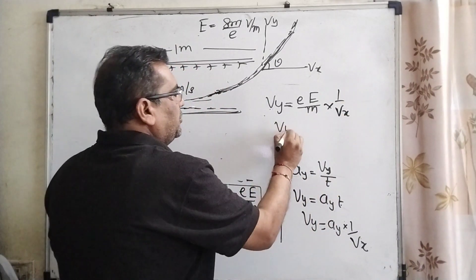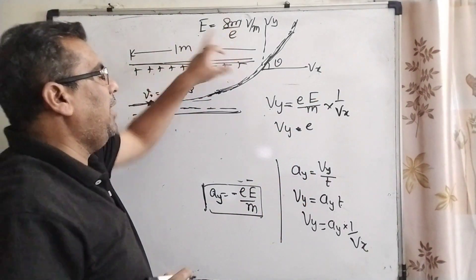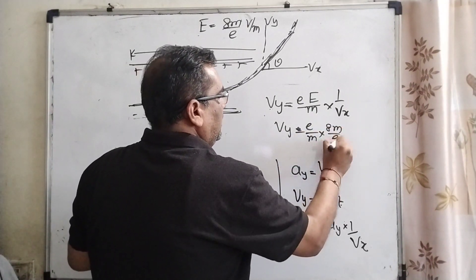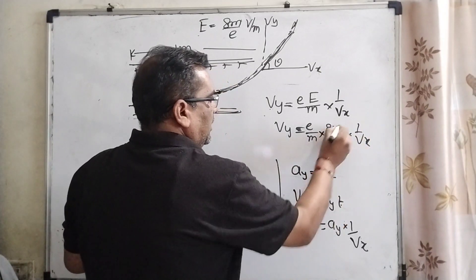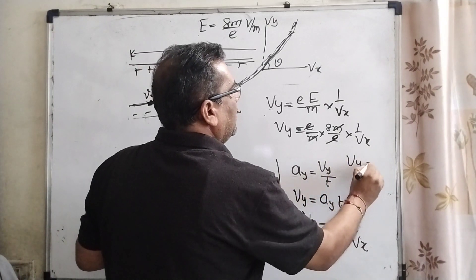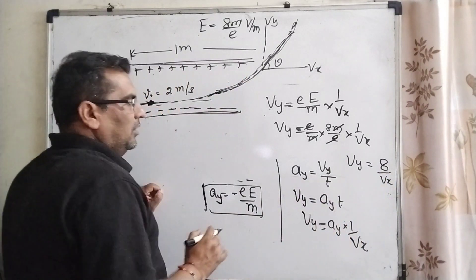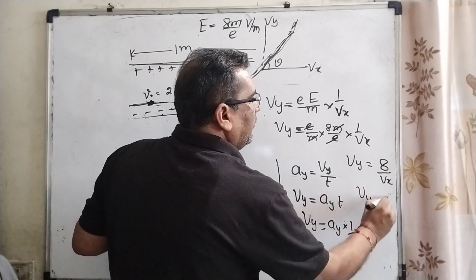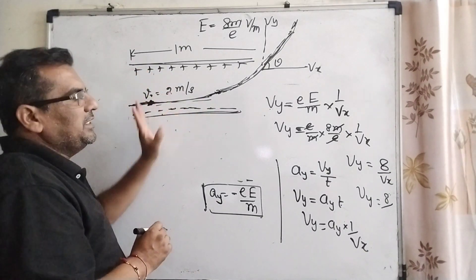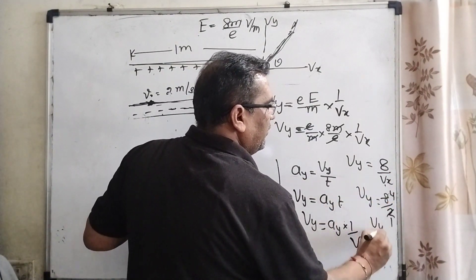Now substitute the value of E. What is E? It is given as 8M/e. So Vy equals (eE/M) times (1/Vx) = (e/M) times (8M/e) times (1/Vx). M cancels out and e cancels out, giving Vy equals 8/Vx. Here Vx is the velocity in the x direction, which is given as 2 meters per second. So Vy equals 8/2 equals 4.